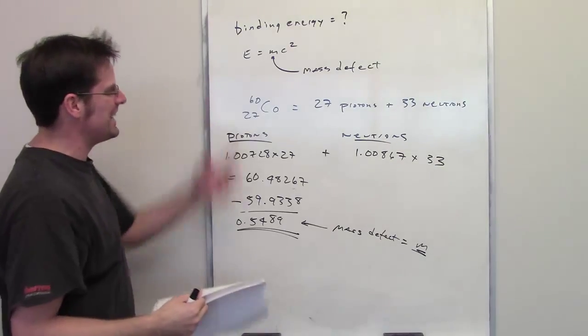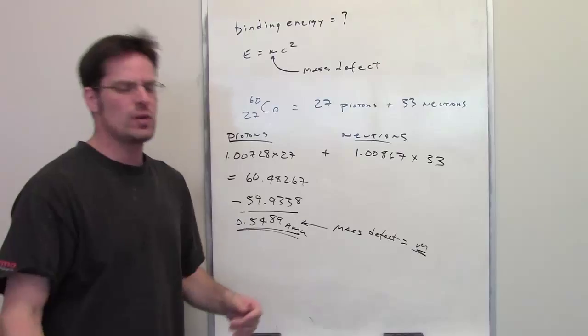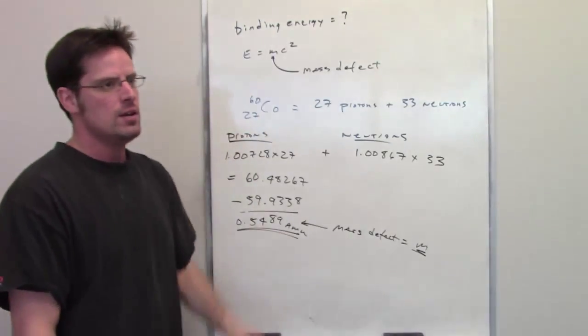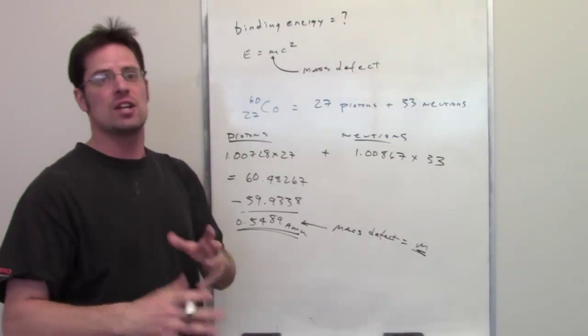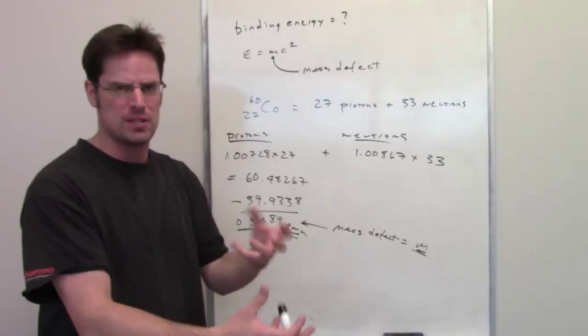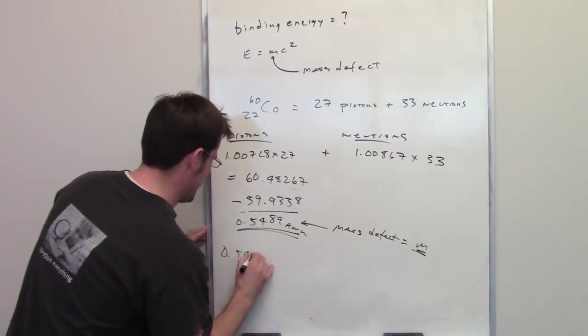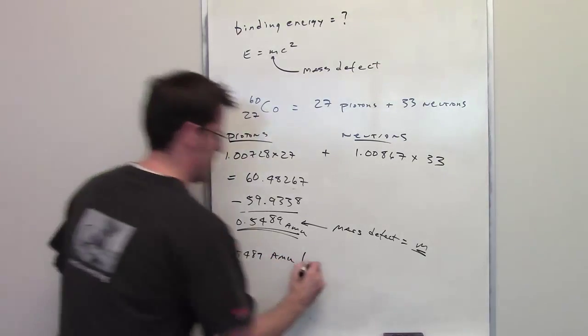So it's asking me what the binding energy is there. Oh, and by the way, this is in units of amu. The trick here is that I want my energy to ultimately end up in units of joules. So I had to convert amu into an SI unit, which is going to be kilograms as the SI unit for mass.